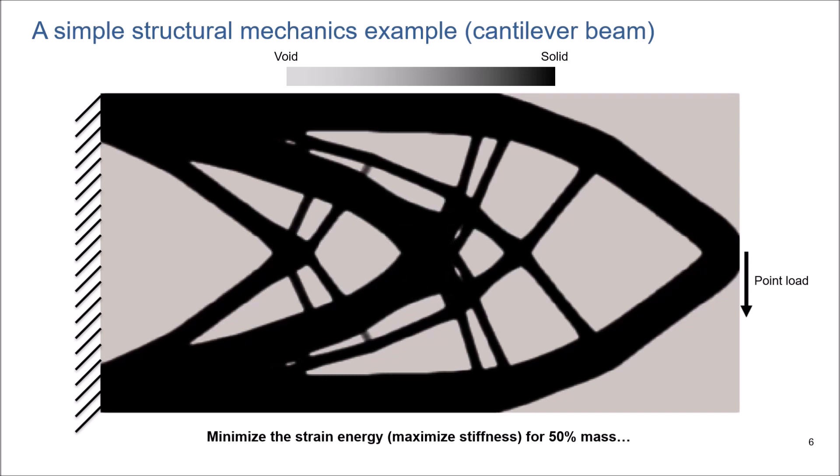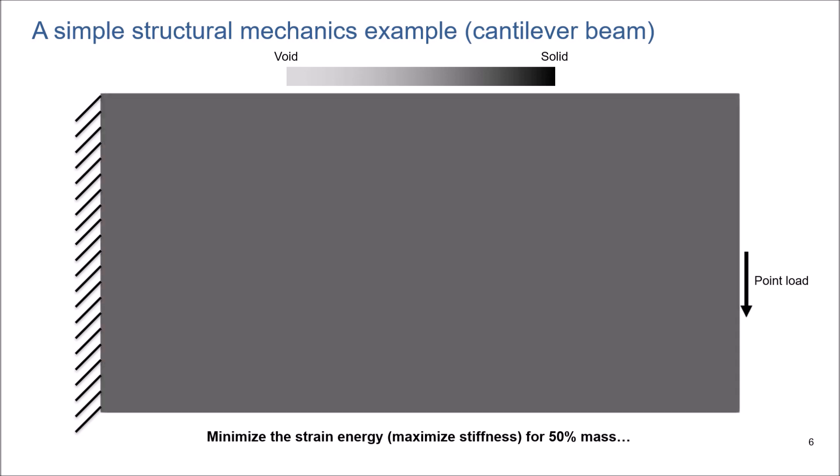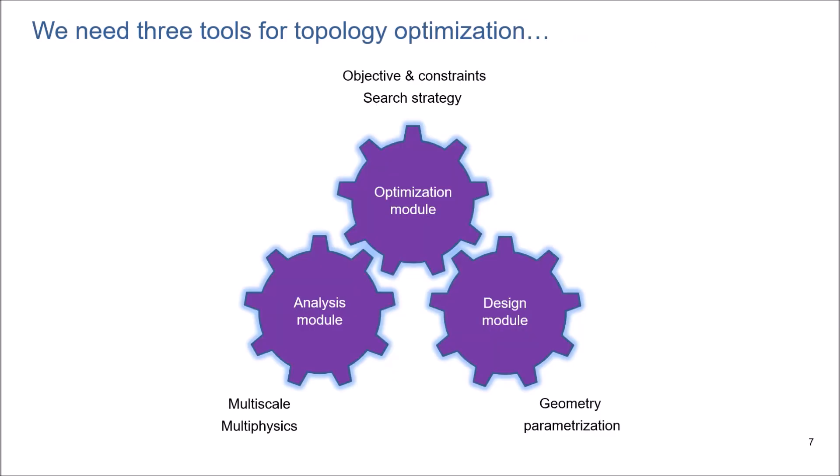The following subject I will talk about is the tools we need to perform topology optimization. Essentially, we need three main tools for topology optimization. First, we need an optimization module to define objectives, constraints, and search strategy. Then, we need a design module for geometric parametrization and defining design variables. And finally, the analysis module for physical modeling.